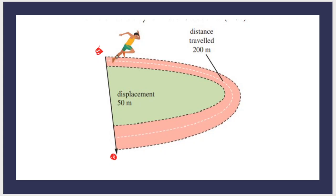The athlete started from this starting point, ran along the path, and ended at the end point. The total distance along the original path is 200 meters. Now look at the displacement — the shortest path between the start and end points is only 50 meters in the figure.